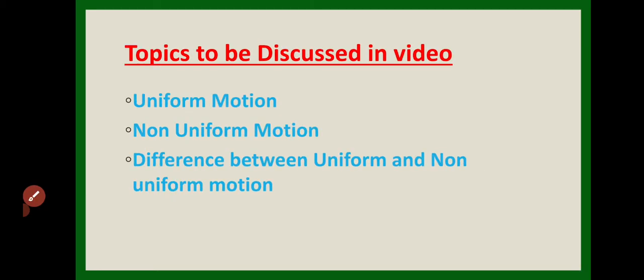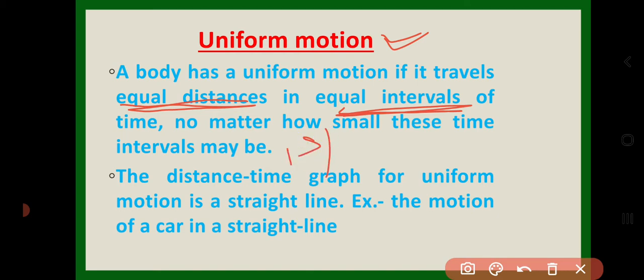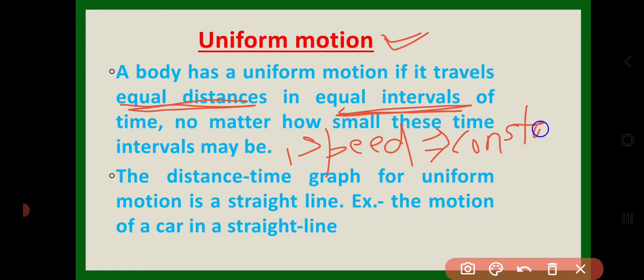What is uniform motion? Uniform motion is defined as when a body or an object travels equal distance in equal interval of time. In this case, speed is always constant, and the distance-time graph is a straight line.